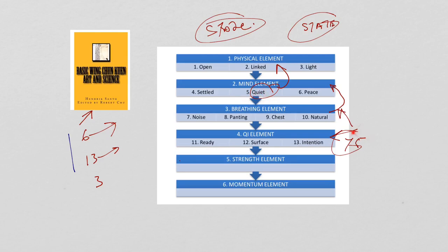So in other words, that Y5, you want to implement that in the qi element, you need to go to the breathing element to the natural state, so that you get into the natural resonance breathing. And then in order to get to the natural resonance breathing, you need to use the quiet state of the mind element.